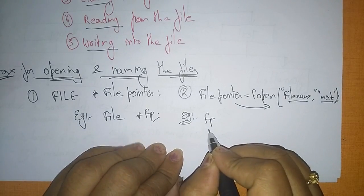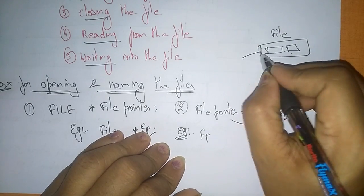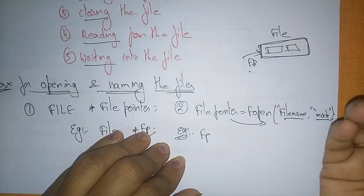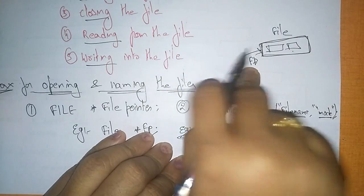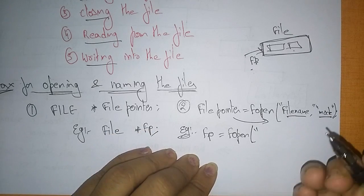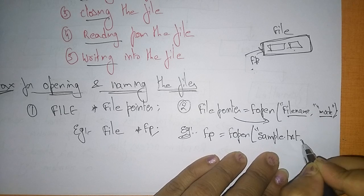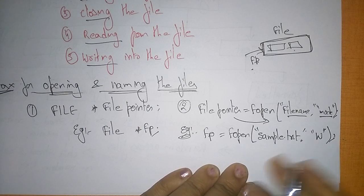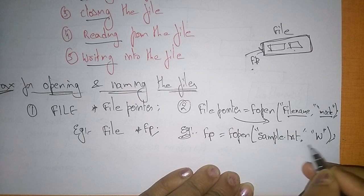fp is the file pointer indicating the address of that file which we want to open or perform operations on. So: fp = fopen("sample.txt", "w"). Here I want to open sample.txt in write mode, meaning I want to write data to sample.txt.